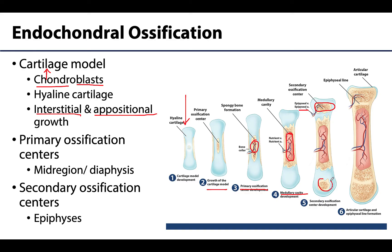You can see one secondary ossification center here and one here. These are often going to start occurring around the time of birth, and eventually the hyaline cartilage model will be completely replaced with bone, except on the ends where there remains articular cartilage. So you still have a remnant of that cartilage model even into adulthood with that articular cartilage. But before an individual reaches adulthood, there is going to be that layer of hyaline cartilage in the metaphysis — remember the epiphyseal plate — and that is going to allow for lengthwise growth in the diaphysis.